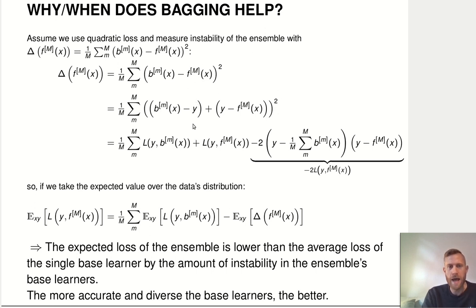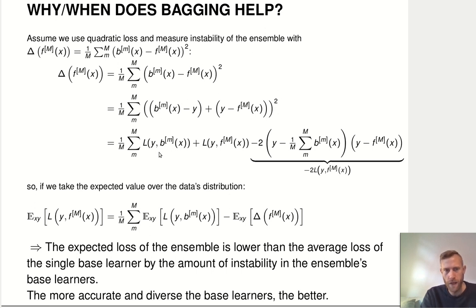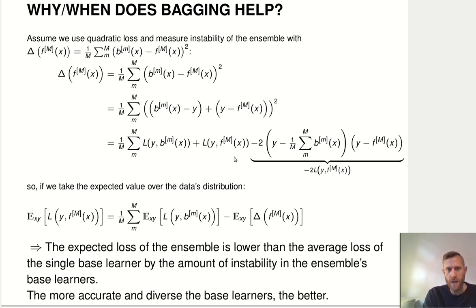We start by adding a creative zero in the square bracket: we subtract y (the true target value) and add y back, so the equation is unchanged. Now we can pull terms together using quadratic loss. Looking at this difference squared, one part is just the loss function for one of the ensemble members — the squared difference between the true target and one base learner's prediction. The other part is the loss function for the entire ensemble — the squared difference between the actual target value and the prediction of the entire ensemble.